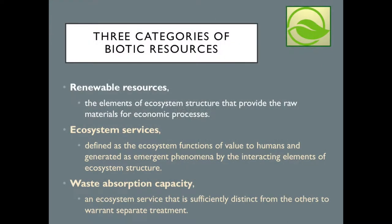In this lecture, Part 3, we will focus on the last two of the three basic categories of biotic resources. Ecosystem services, defined as the ecosystem functions that are of value to humans and generated as emergent phenomena by the interacting elements of ecosystem structure. And waste absorption capacity, an ecosystem service that is sufficiently distinct from the others to warrant separate treatment.